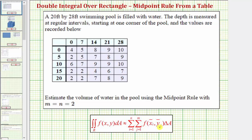The midpoint rule is given here below, where the double summation of f of x sub i bar, comma y sub j bar, times delta A is approximately equal to this double integral, which would be the volume under a surface above the xy plane, as long as f of x, comma y is non-negative.